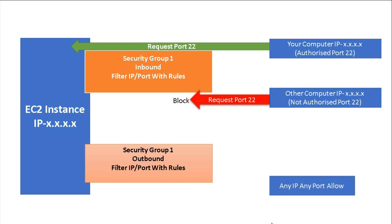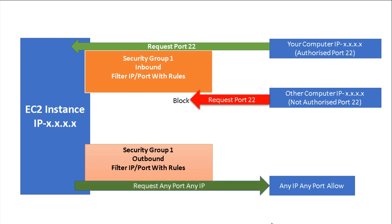If we want to access the outside world, by default any IP and any port is allowed for outbound. That means the EC2 instance can access everything to the outside because any port and any IP address is allowed.